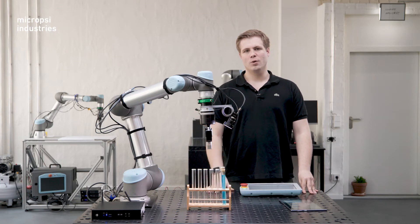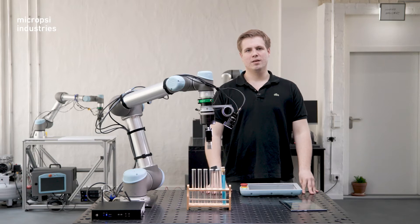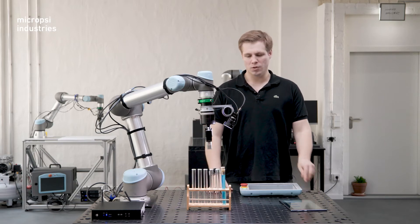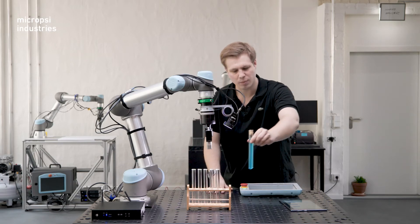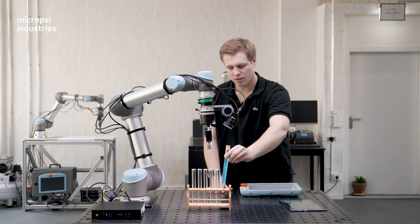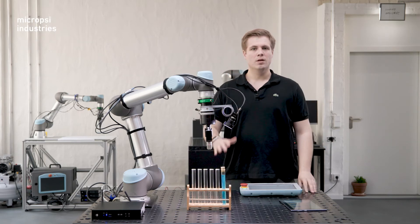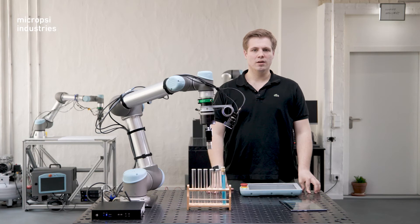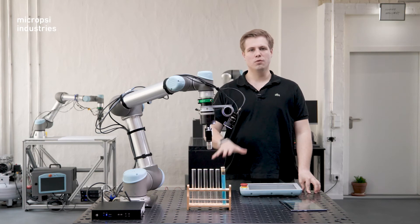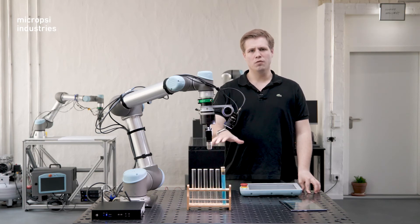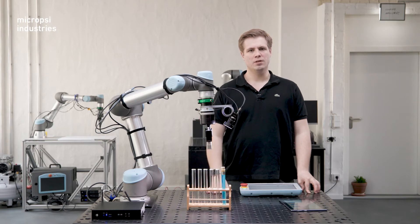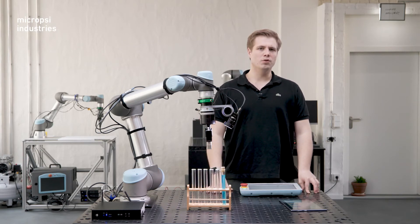Before anything, we have to establish the task. Imagine you want this robot to individually pick up the glass beakers and move it to the other side of the table. Using its native controller, you can program the robot to move towards the beakers or to move a beaker to the other side of the table. These are predetermined movements.